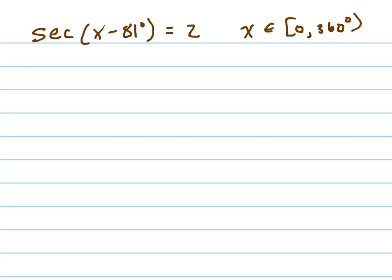Let's solve this secant equation for x between 0 and 360. This is a tricky one because this negative 81 right there, minus 81, shifts the graph to the right.